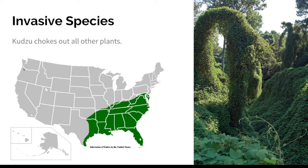Another example of a change caused by humans is invasive species. Because humans travel all over the world, we end up taking organisms with us. Sometimes we do this on purpose, other times on accident. But the organisms that travel with us can have profound impacts in the new ecosystem where they live.